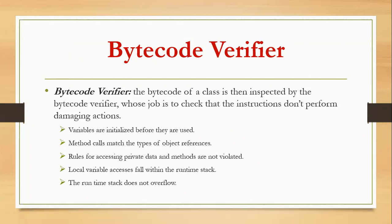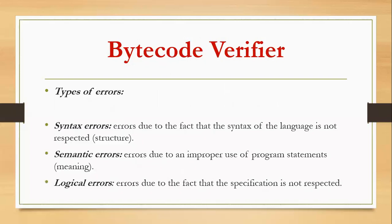What the bytecode verifier checks includes things like whether variables are initialized before they are used, whether method calls match the type of object references, whether local variable accesses fall within the runtime stack — it will basically look for errors in your program.